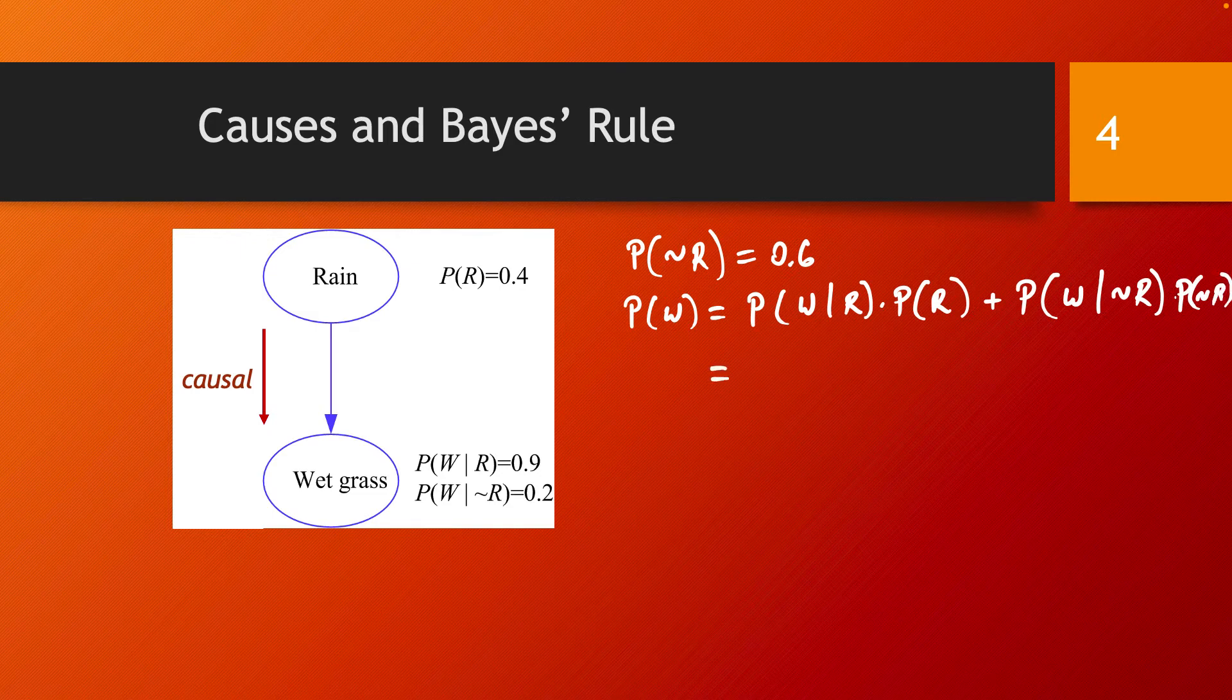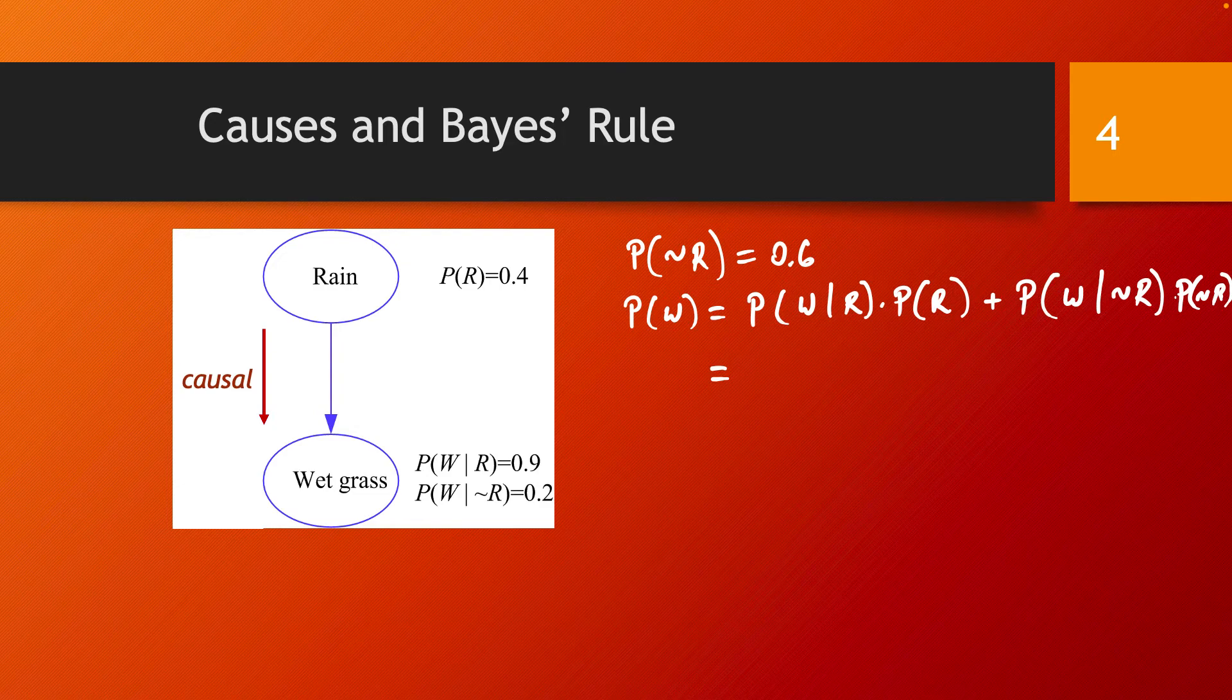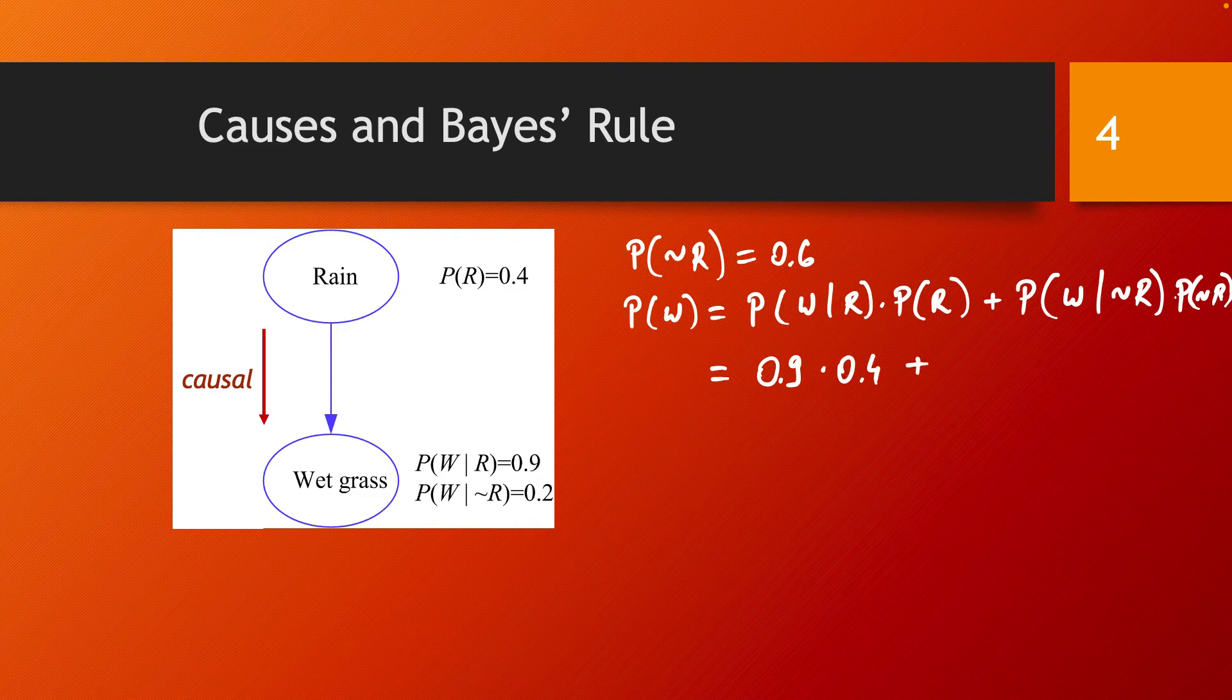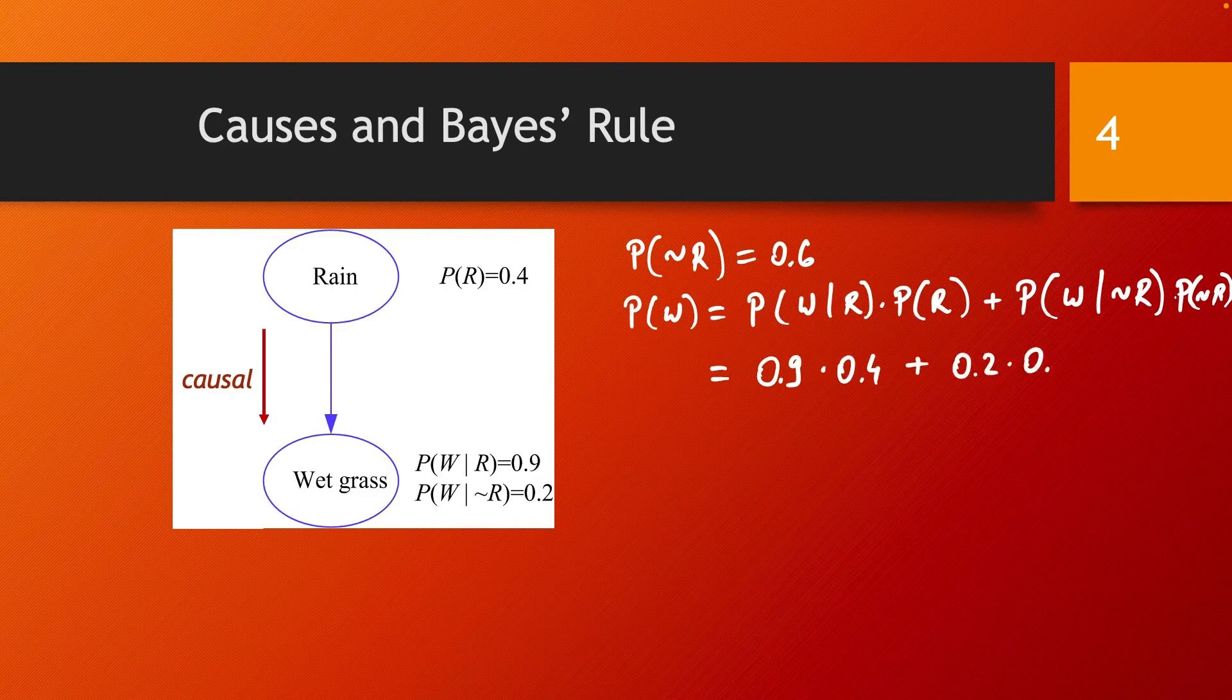Given these numerical values in our example we can calculate this to be 0.9 times 0.4 plus 0.2 times 0.6, and that turns out to be equal to 0.48.